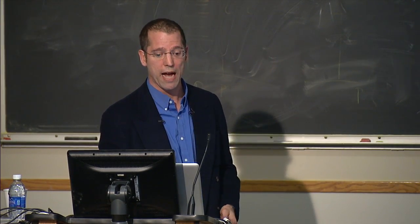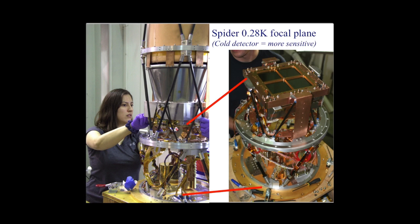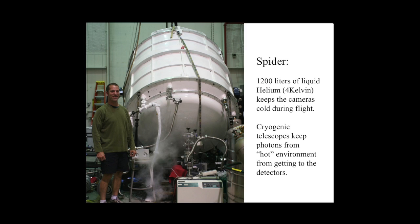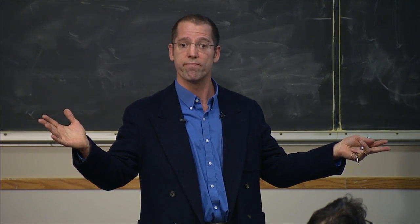The silicon wafer is cooled to about a quarter of a degree Kelvin using fancy refrigeration. The absorbing island is suspended on very thin legs over empty space, allowing it to heat up above the base temperature. For Spider, the entire optical train including lenses is cooled to four degrees Kelvin. We achieve this by placing everything inside a big thermos bottle filled with liquid helium — 1200 liters or so — to get the cameras, optics, and everything down to four degrees so the super-sensitive detectors don't see warm light from the room.